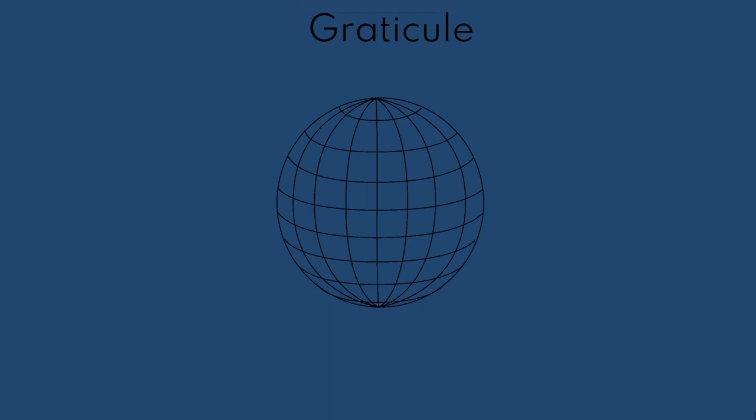The grid-like network of latitude and longitude lines encircles the entire globe and is called the graticule. The equator and prime meridian intersections define the origin of the graticule.